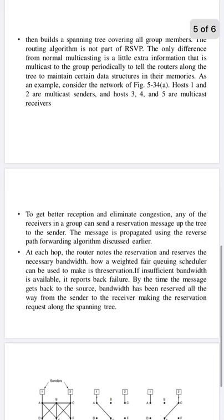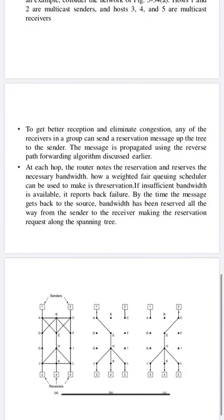If you observe the figure, we have two senders — sender one and sender two — and multiple receivers: three, four, and five. The question is: how are resources going to be reserved in the network? Once the receiver addresses are given to the senders, receivers send one message from the bottom to the top — from receivers to the sender — telling the routers how much resources are required.